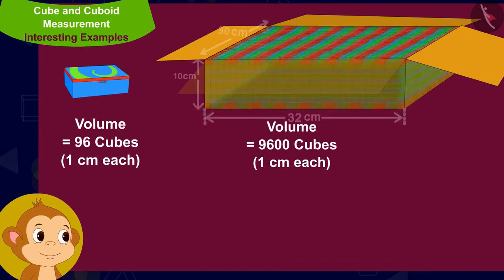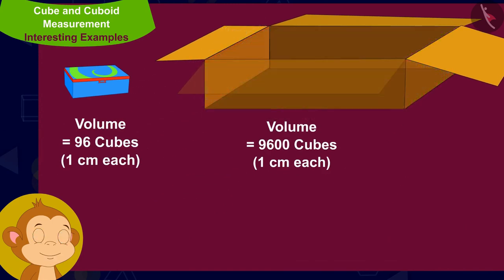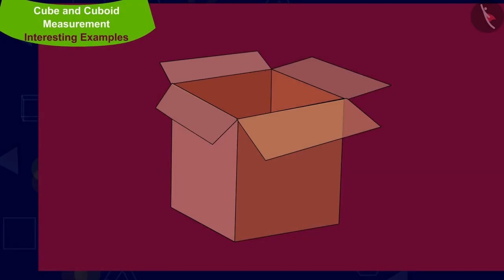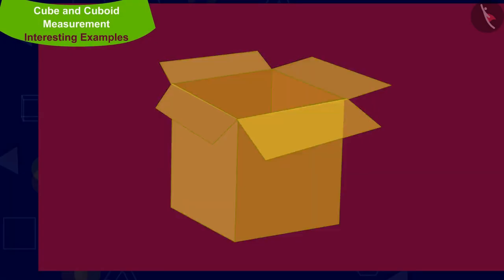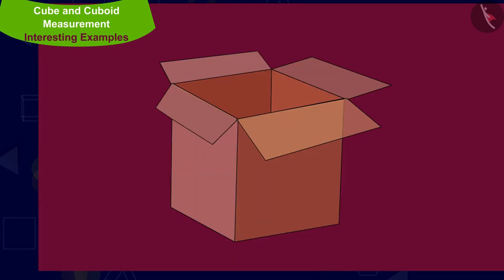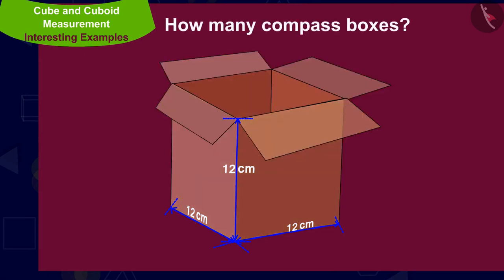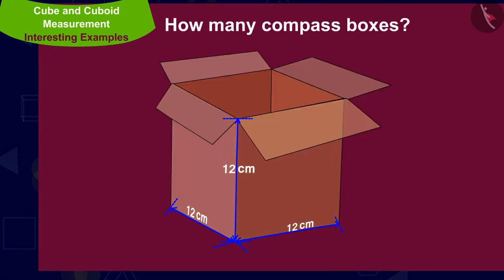Therefore, in this box, 9,600 divided by 96 — that is 100 compass boxes will fit. Children, if the edges of Babban's cube shaped box are 12 centimeters each, then can you tell how many compass boxes Babban will be able to keep in this box?